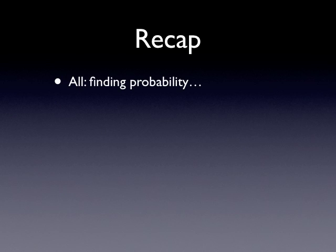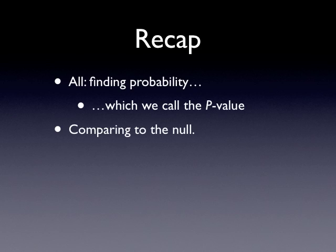The thing that's common for all of these is we're trying to find some probability. In general, we're going to find what we call the p-value. That's in this last learning goal that we've had. And we're always comparing to the null hypothesis. Statisticians often say comparing to the null — it's sort of a snazzy shorthand. The null hypothesis, remember, is the thing where nothing special is going on. With Aunt Belinda, the null hypothesis is the coin is fair and she has no special powers, so the probability of heads is 0.5.